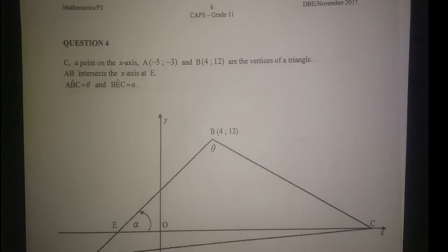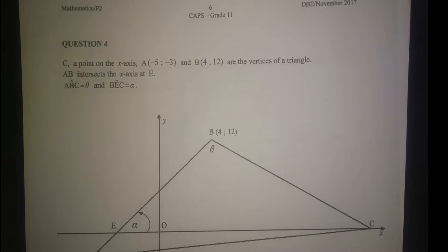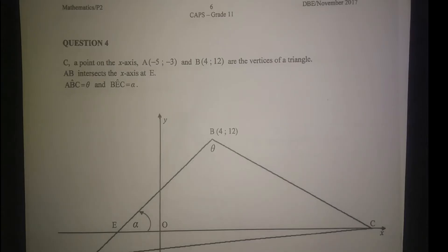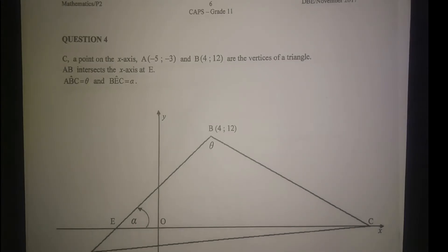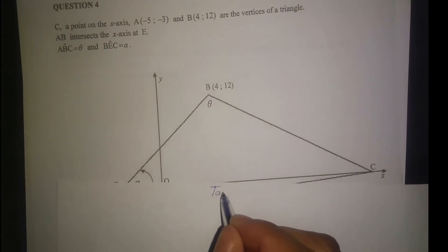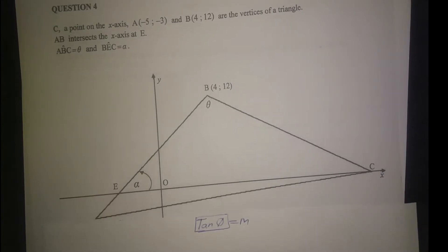In an exam, there are two types of questions on analytical geometry. One deals with equations, and the other question deals with angles. So I'll call it angles in a shape. In this question, Question 4, it deals with angles. In other words, we use this formula: gradient is equal to tan theta.